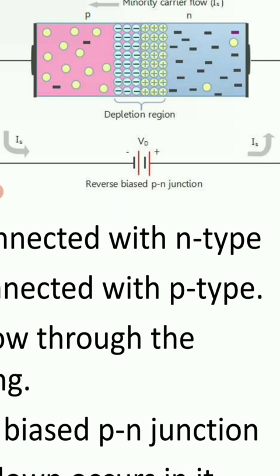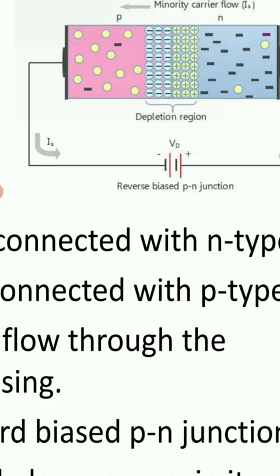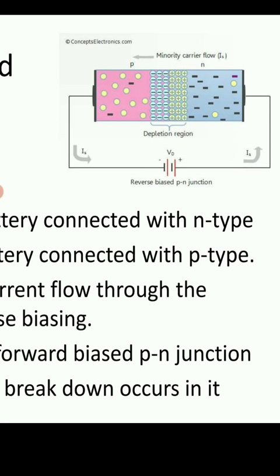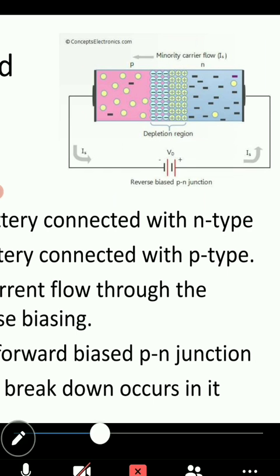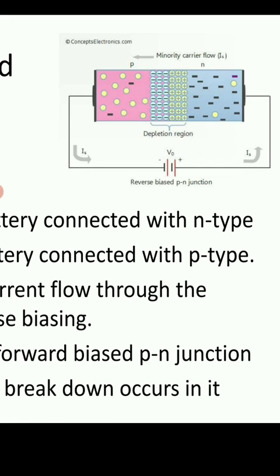In forward biasing, as the voltage increases, the current increases. But in reverse biasing, there will be very small current flow because there is a very high barrier potential. Current flows only because of minority charge carriers. In P-type we are having holes, in N-type we are having electrons. When we are giving the reverse bias, you will get minority charge carrier holes in the N-type, and in P-type the electron count is very low. Current is flowing because of minority charge carriers, and these are very small, due to which you will get very small reverse current.